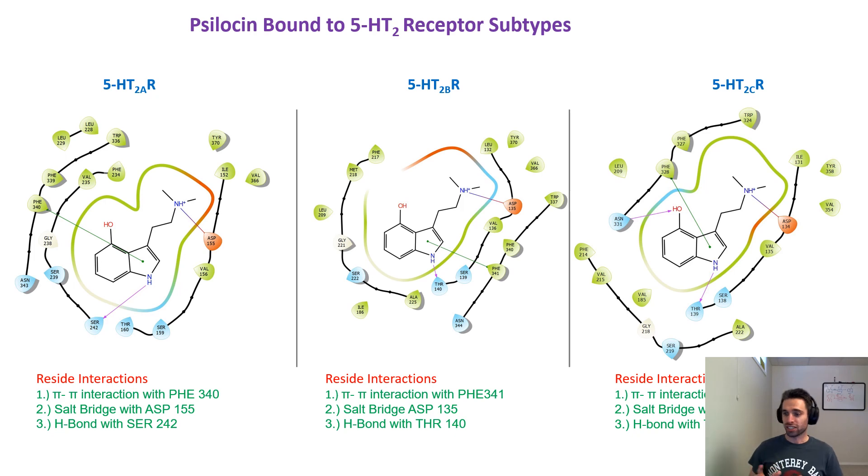So basically what's interesting is it tells us that the sequence homology between the three receptors is quite similar. There's really just that difference in the mutation of where you have that hydrogen bond with the indole. In 2A, it occurs at serine 242.